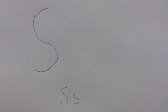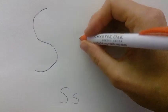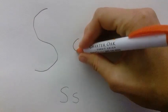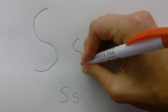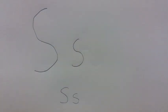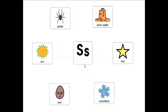Lowercase S is the same motions. You just start in the middle of the page, draw a little curve, and go backwards with another little curve. And you have a lowercase S. The letter S makes the sound ssss.